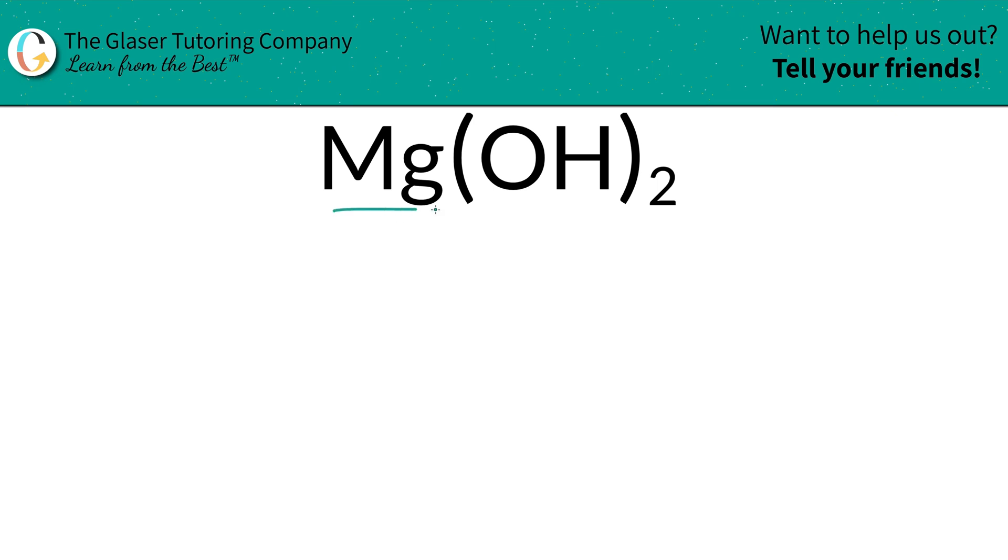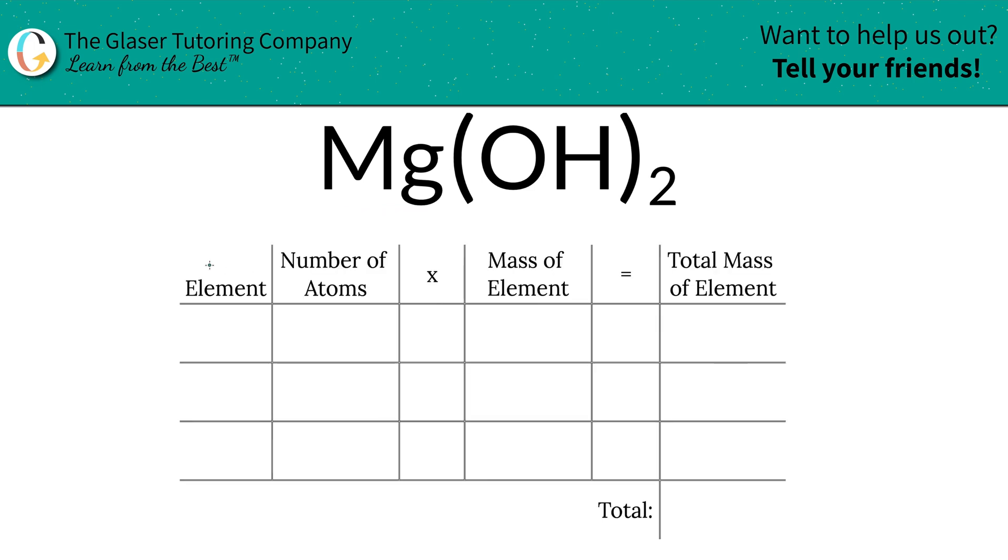So how do we find the mass percent of magnesium, oxygen, and hydrogen in magnesium hydroxide? Well, we've come to the right place. First we're going to find the total mass, then we can find those percentages. Easy peasy.